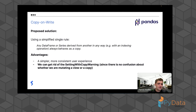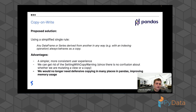This provides a simpler and more consistent UX. Every operation only updates the object you are currently operating on, so you don't have to keep in mind that there might be another dataframe 10 lines above that might get modified. There's no confusion anymore about copies and views — everything behaves as a copy — and so we can get rid of the SettingWithCopyWarning.